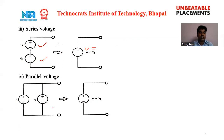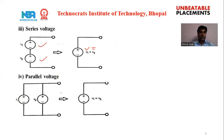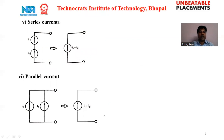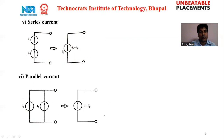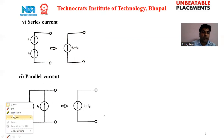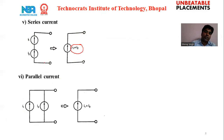The fourth rule is parallel combination of voltage sources. If N number of voltage sources are connected in parallel, this combination can be replaced by a single voltage source, since V1 equals V2 in a parallel combination — voltages are the same. The fifth rule is series connection of current sources: if N current sources are connected in series with the same direction, they can be replaced by a single current source, since the same current flows in a series circuit.